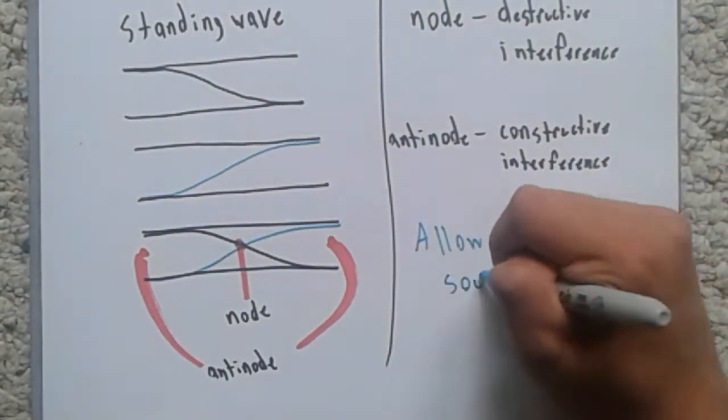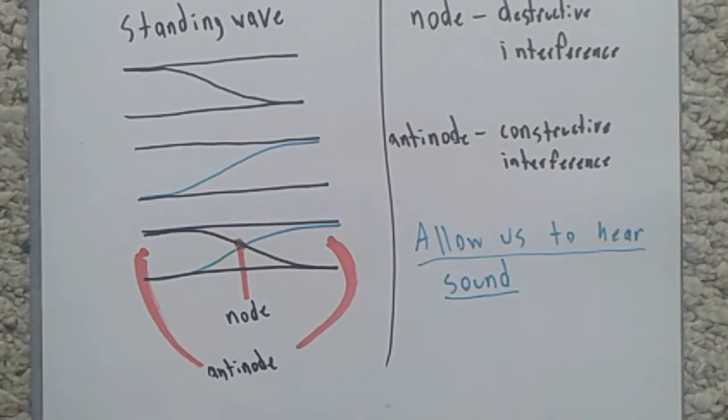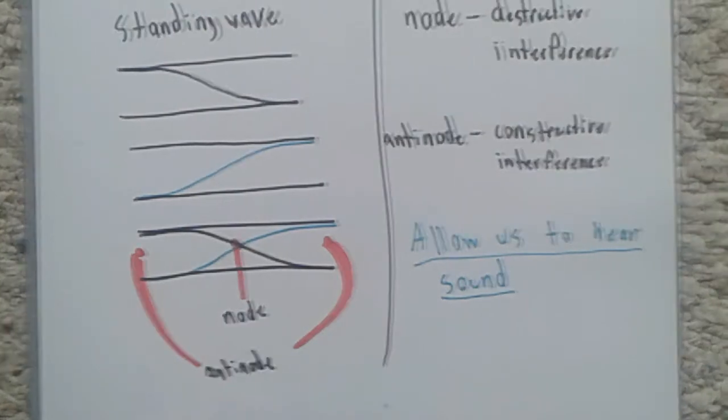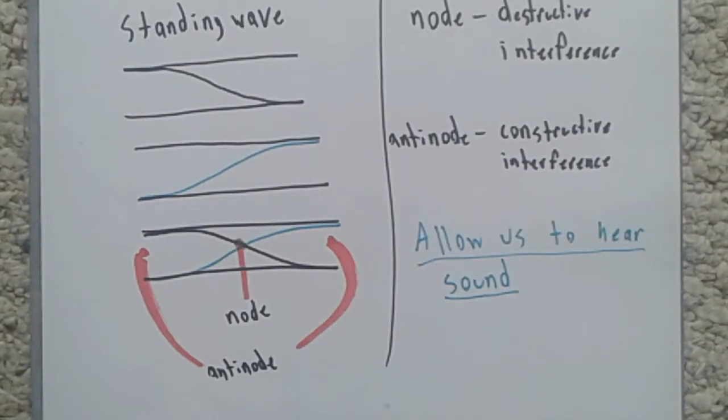This creates nodes, the points of the wave that don't oscillate, and anti-nodes, the points that oscillate at the greatest amplitude. Standing waves are what allow us to hear sound.